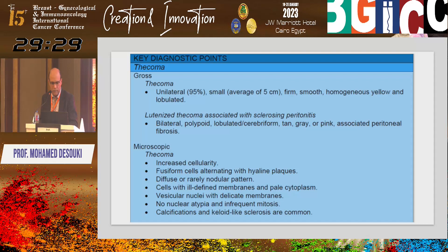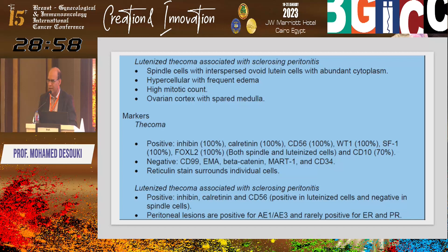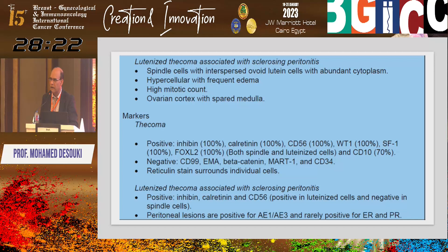Sclerosing peritonitis shows fascicular growth of fibroblasts in the omentum that are mitotically active but cytologically bland, with inflammatory cells — this is a reactive process, not tumor. Summary of thecoma versus luteinized thecoma: both are unilateral except in syndromic cases. Immunohistochemically, inhibin is 100%, calretinin 100%, CD56, WT1, and SF1 are all strongly positive. Negative for CD99, EMA, Melan-A, CD34. Reticulin highlights single individual cells.